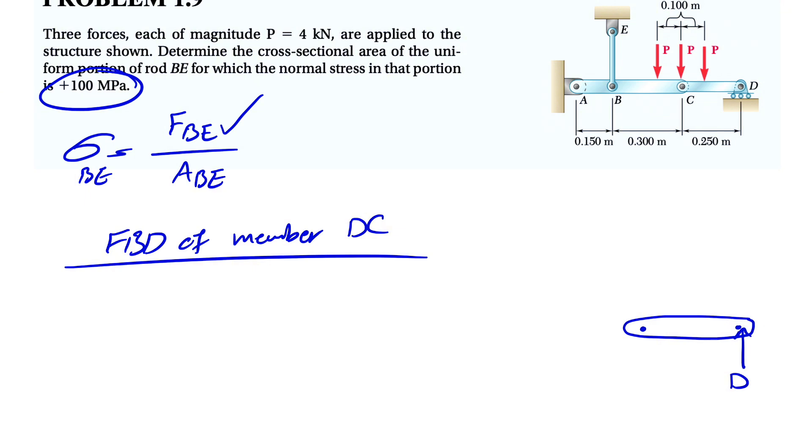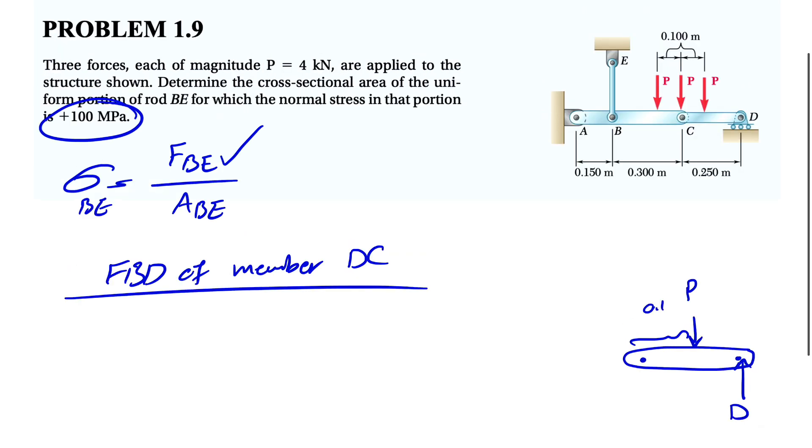We have the force P that is applying here, which is 0.1 meters from point C. Since we know the length of CD is 0.25, we have 0.15 here. If we add this, 0.15 plus 0.1 is going to give us 0.25. If we look at this, we'll see that the force P in the middle is not applying at member CD; it's applying at member ABC, so we don't consider anything in here.